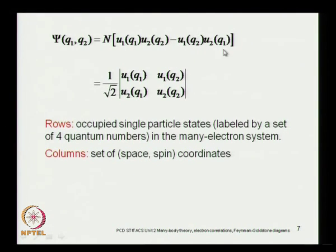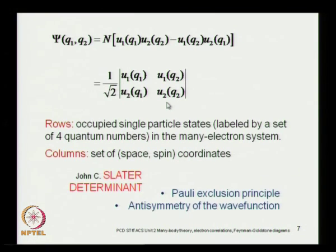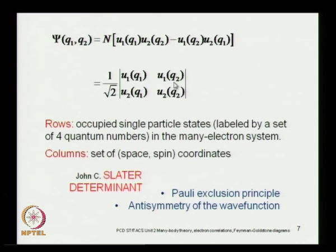Indistinguishability demands that you construct a linear, anti-symmetric superposition. You can write this as a determinant — a 2×2 determinant for the two-electron system — called a Slater determinant. The Pauli exclusion principle and the anti-symmetry of the wave function are automatically built in: if you interchange q₁ and q₂ the determinant changes sign, and if two rows are the same the determinant vanishes — that is the Pauli exclusion principle.